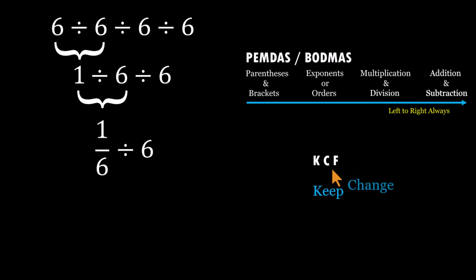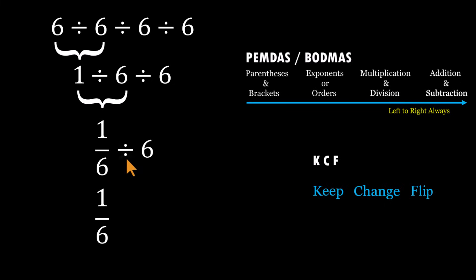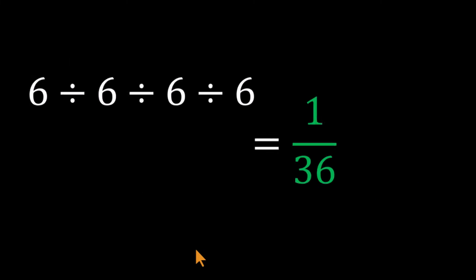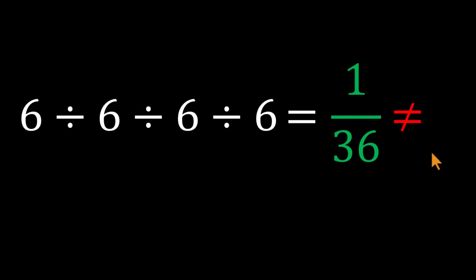Since we're dividing a fraction by a number, we use the KCF rule: keep, change, flip. Keep the first fraction, one over six. Change division to multiplication. Flip the six into one over six. Now multiply across: one times one is one on top, six times six is 36 on the bottom. That gives us the final answer: one over 36, not one.